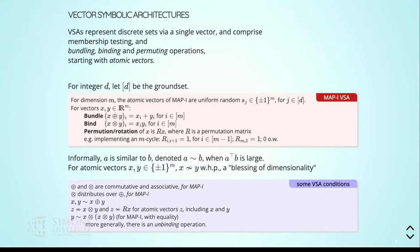Starting with those sign vectors, we can do operations on them. In MAP-I, bundling is just adding them, binding is element-wise multiplication, and permutation is rotation — so the first element becomes the second, the second the third, and the last becomes the first. Multiplying by a permutation matrix permutes the coordinates of whatever vector you're operating on.